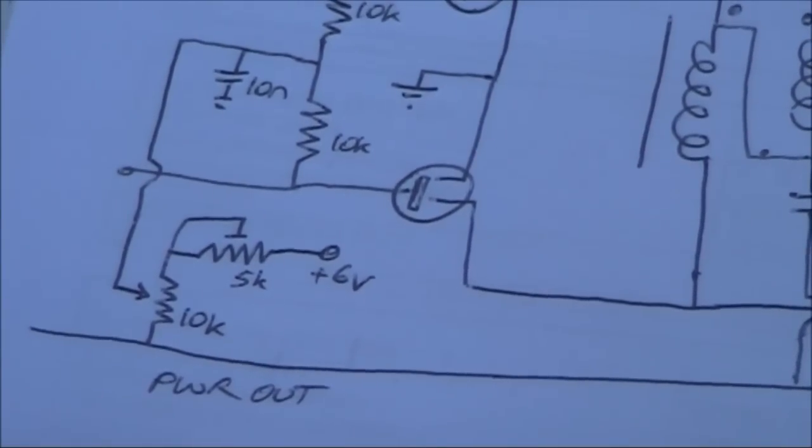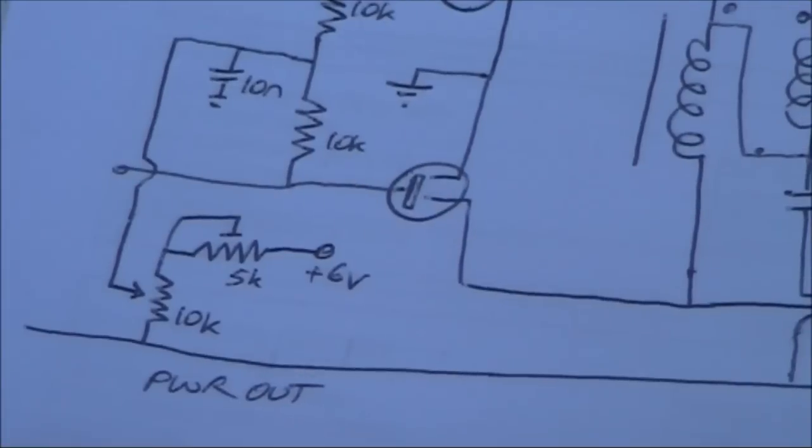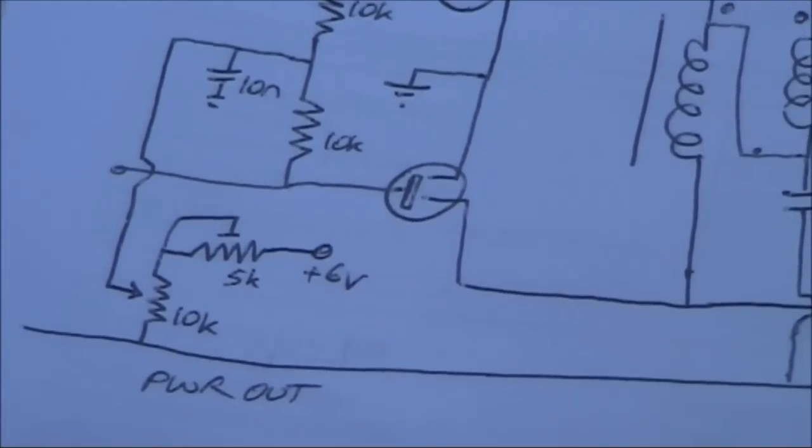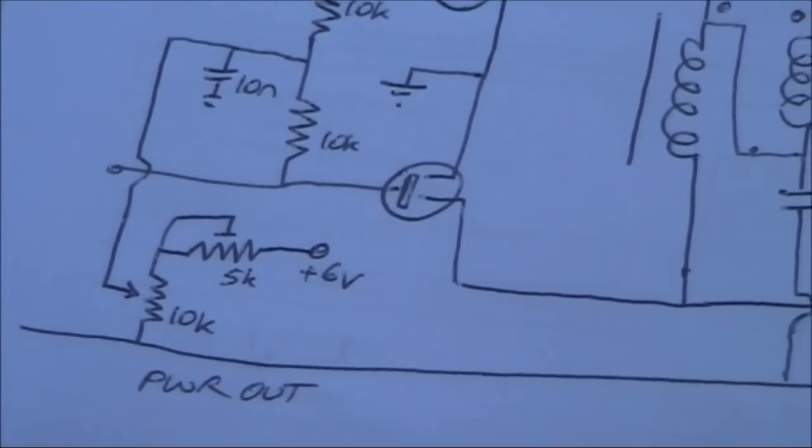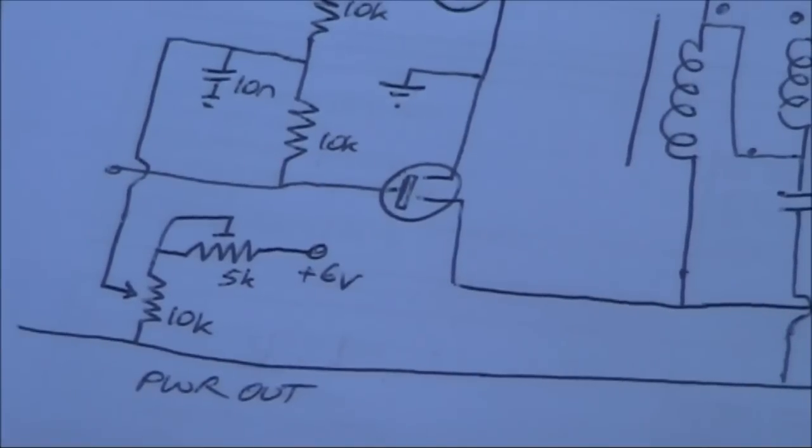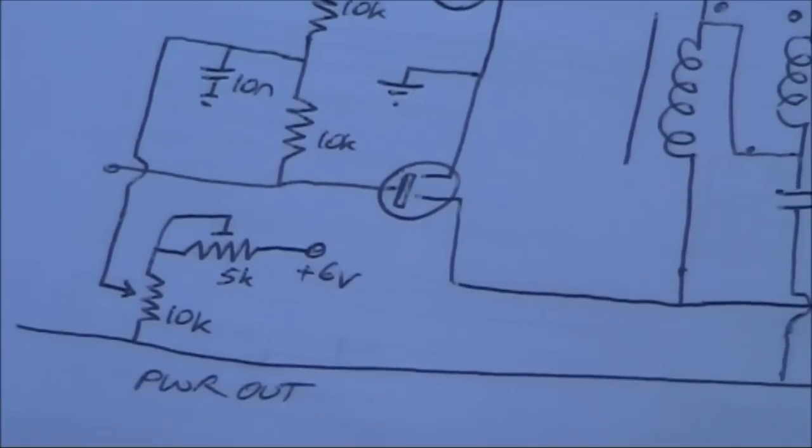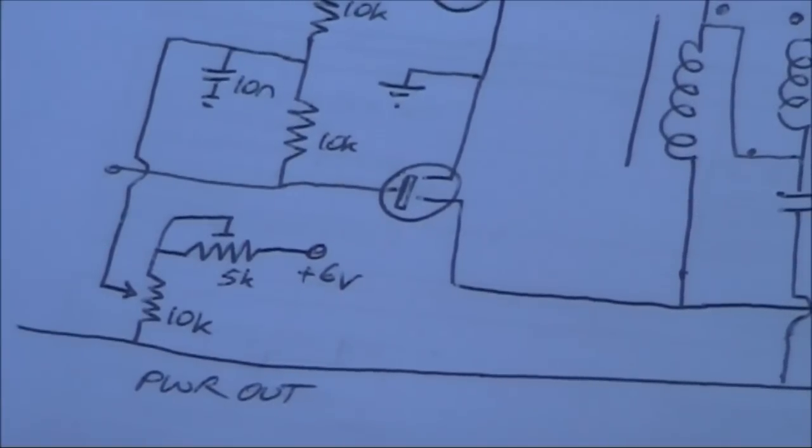You'll notice there's two potentiometers. One is a trim pot, 5k, and the other is a potentiometer that extends to a knob on the front panel at 10k.